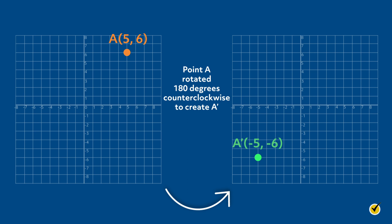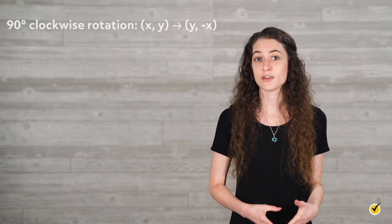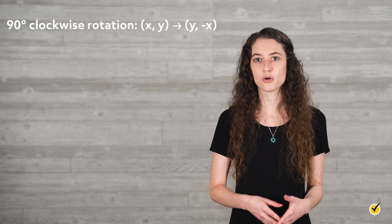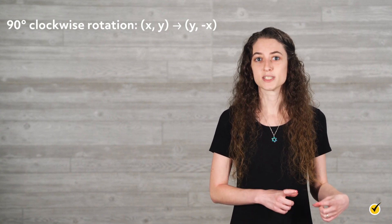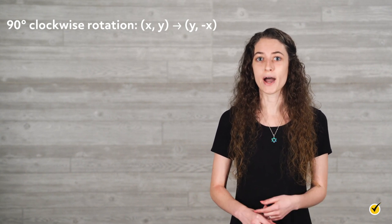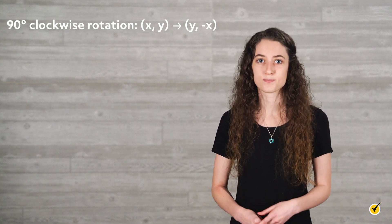Lucky for us, these experiments have allowed mathematicians to come up with rules for the most common rotations on a coordinate grid, assuming that the origin is (0, 0) as the center of rotation. Here are the rotation rules. If you want to rotate a figure 90 degrees clockwise about the origin, you take the coordinate points (x, y) and they become (y, -x).